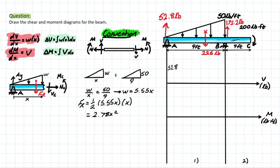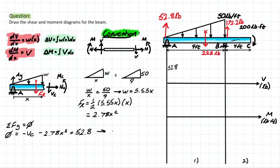Now we proceed as normal but with FR as a second-degree function. Taking the sum of forces in Y to solve for shear, VC is negative by our sign convention. So we have: V = −2.78x² + 52.8, incorporating the AY reaction of 52.8 pounds.